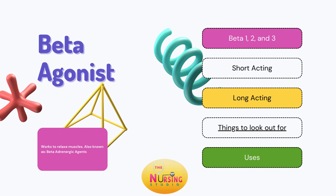Beta agonists — you may be familiar with these, also known as the beta adrenergic agents. They're used in the function of a bronchodilator that relaxes our smooth muscles in various organs. The ones we are commonly paying attention to are those beta-2 agonists that function to relax the muscles in the lungs. Because there's beta-1, beta-2, and beta-3: beta-1s work more towards the heart, beta-2 which we'll be discussing works more towards our lungs. And just a little sidebar, beta-3 works on the bladder predominantly. One common way to remember this is beta-1, you have one heart; beta-2, you have two lungs.